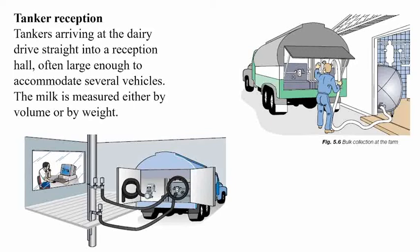For tank reception, tankers arrive at the dairy and drive straight into the reception hall, which is often large enough to accommodate several vehicles. The milk is measured either by volume or by weight. As you can see in the figure, a pipe is connected and milk is directed straight into the storage tank. The second figure shows how we weigh the milk tanker and carry out cleaning activities after unloading.